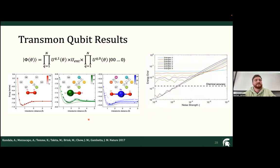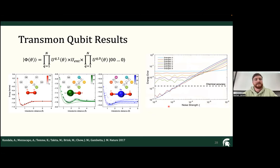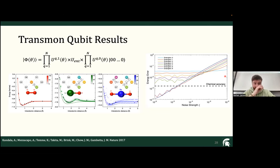They also looked at the number of entanglers versus noise strength. If you want eight entanglers, you can get below chemical accuracy with very little noise, but more entanglers means more noise, which degrades results significantly — we're in the NISQ era. Those are the results for transmon qubits.